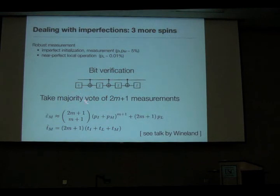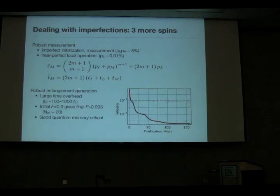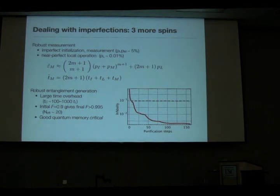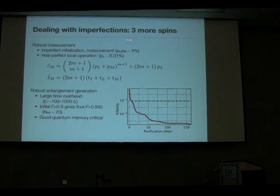Dave Wineland's group has done this in experiment and been able to take the measurement error from about 90 percent success rate to about 99.9 percent success rate, so this procedure works quite well in practice as well as in theory. The other thing I need to do is improve upon the entanglement generation. Because of photon loss and interferometric stability problems, getting fidelities above 99.99 percent will be extremely hard. Instead, we assume our fidelity is only on the order of 90 percent, and we use the purification procedure I described, which needs two extra spins — one for bit error purification and one for phase error purification.